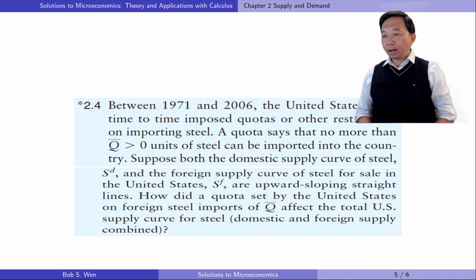Let's solve exercise 2.4. Between 1971 and 2006, the United States from time to time imposed quotas or other restrictions on importing steel. A quota says that no more than Q bar units of steel can be imported into the country. Suppose both the domestic supply curve of steel as D and the foreign supply curve of steel for sale in the United States as F are upward sloping straight lines. How did a quota set by the United States on foreign steel imports affect the total US supply curve for steel?